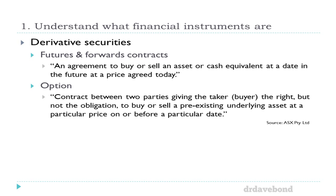An option, just like the terminology suggests, is an option to do something. If I had an option with Aaron to buy gold at $50 an ounce but I could get it on market at $30, I'm not going to buy it from him — I won't exercise that option. It gives me the right to buy at $50, but I don't have the obligation to buy from him if I could get it at a better price somewhere else. Those are the two types of things we'll be looking at for accounting.